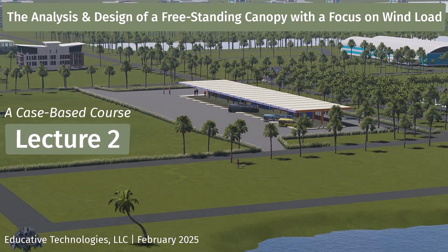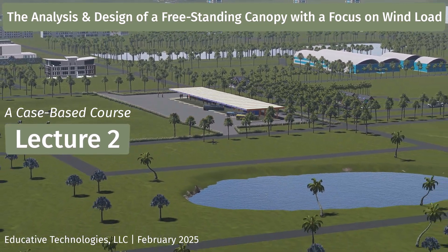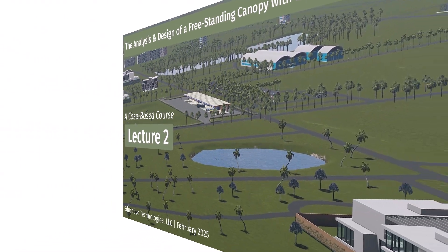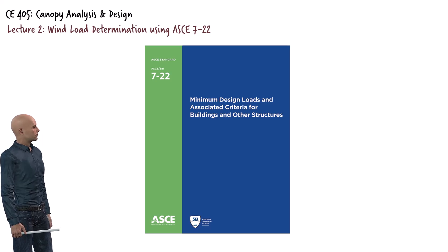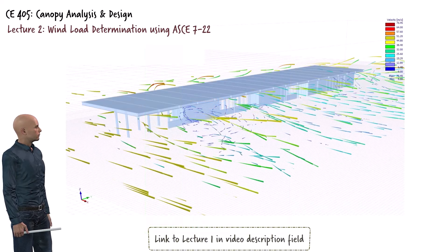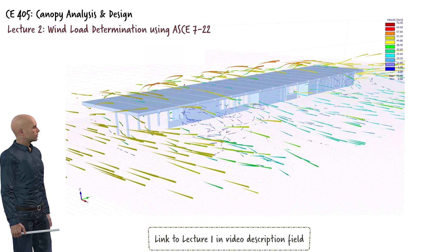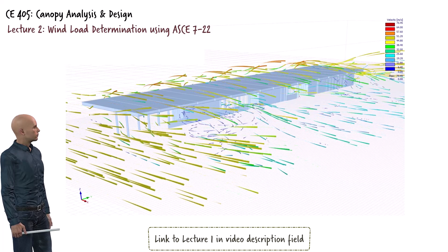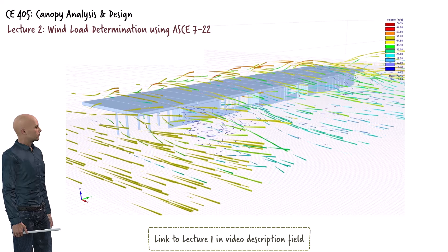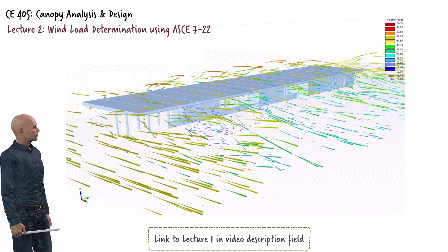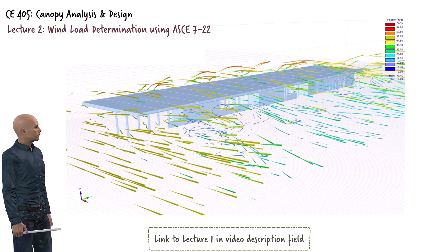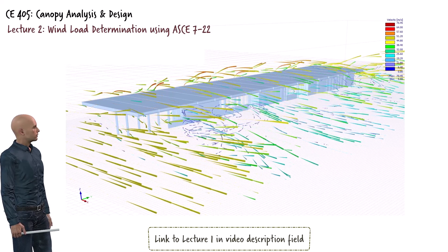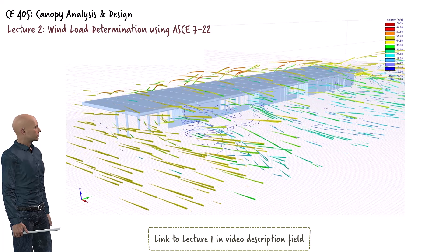This is Lecture 2 of the Canopy Wind Analysis and Design course. We will start exploring the application of the ASCE 7 standard to determine wind loads for our freestanding canopy. In lecture 1, we used digital simulation software to study the effects of wind on the canopy. While this exercise yielded valuable insights into the interaction between wind and the structure, the results remain inconclusive for practical design. So we need to use an official design standard like ASCE 7 to determine loads that can actually be used for design purposes.